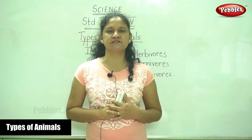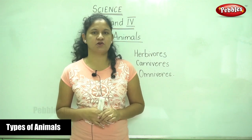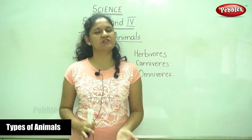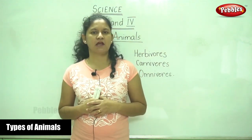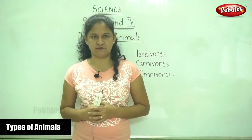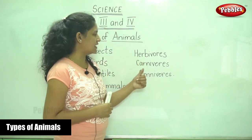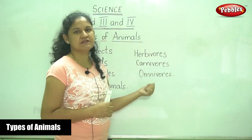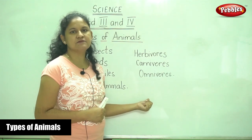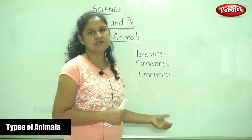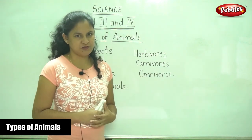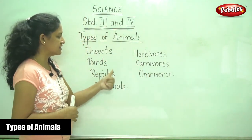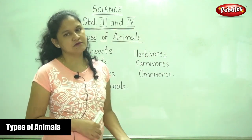Omnivores depend both on plants as well as animals for their food and are termed omnivores. They have no particular choice — in the absence of plants they eat flesh, and in the absence of flesh they eat plants. So to recap: animals that eat plants are herbivores, animals that eat flesh are carnivores, and animals that eat both are omnivores. We will be going into detail about insects, birds, reptiles, and mammals.